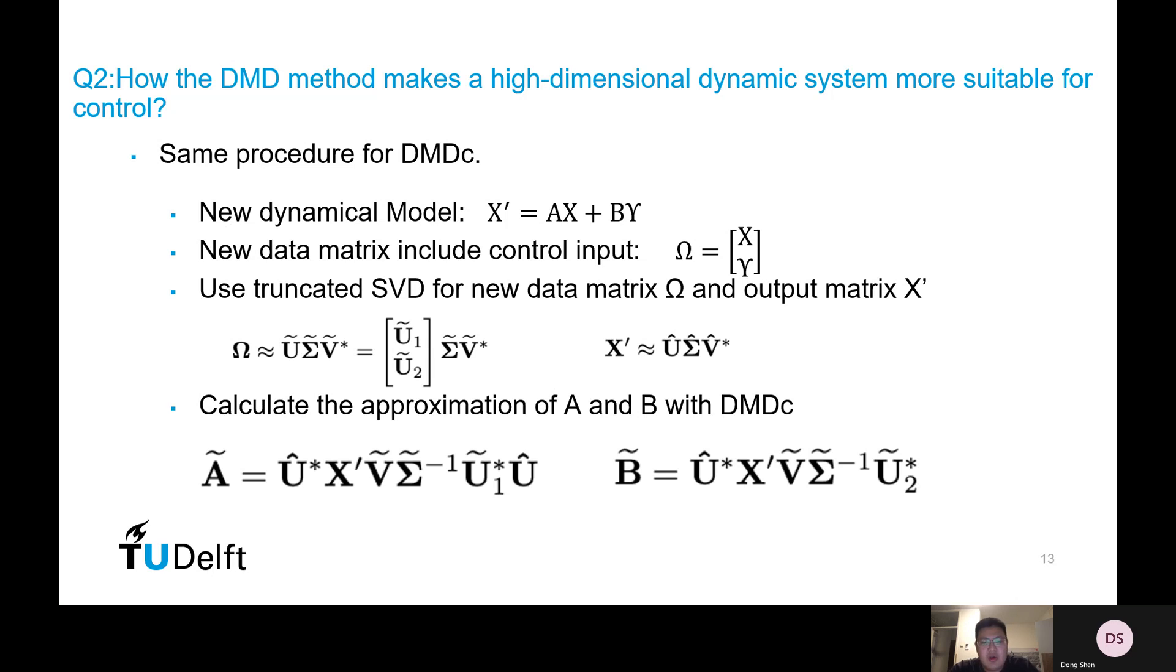After that, we can just calculate the approximation of A and B. These are the two main ways to make a high dimensional dynamic system more suitable for control. The first one is to reduce the model order by the truncated SVD and the data projection. The second way is to include control inputs to get a more accurate model.